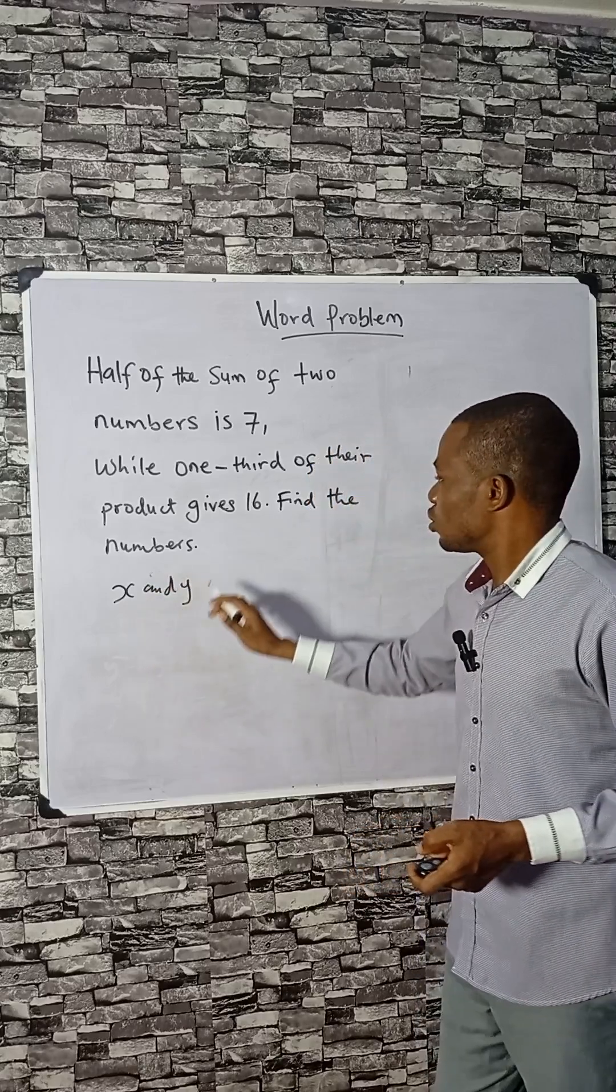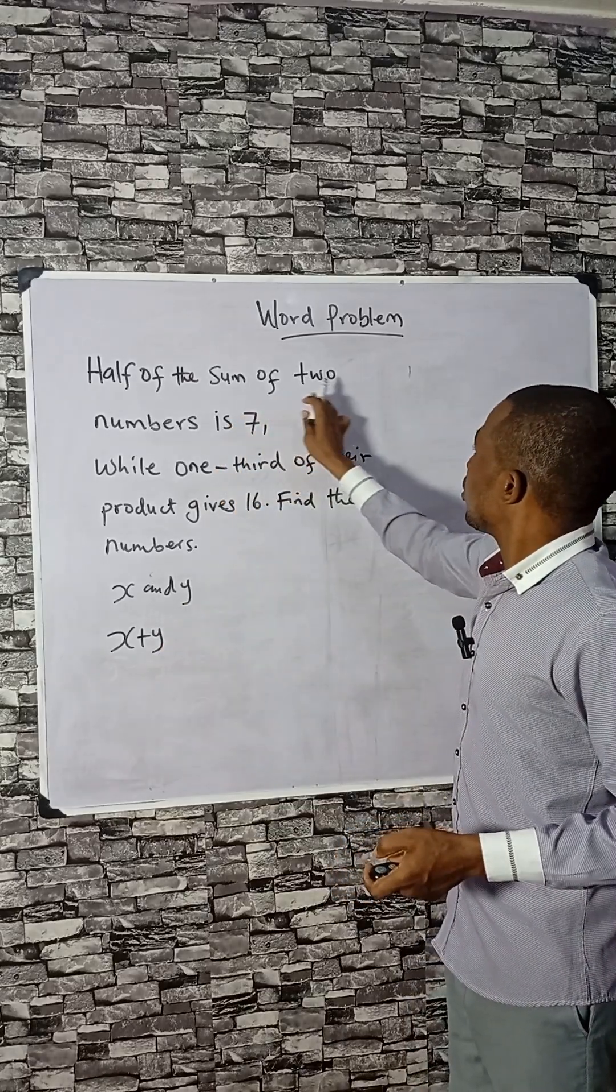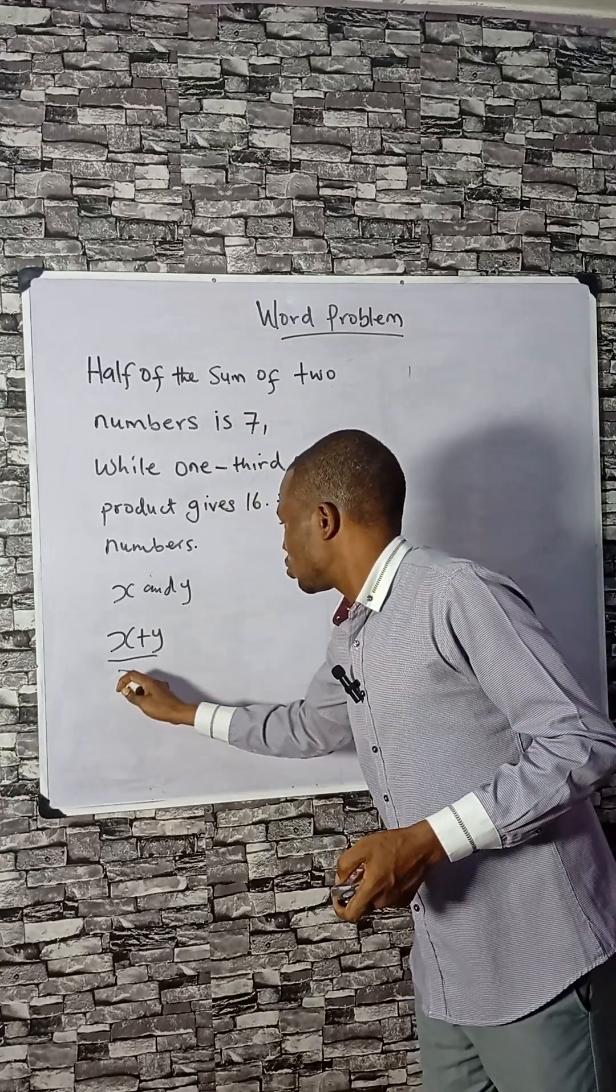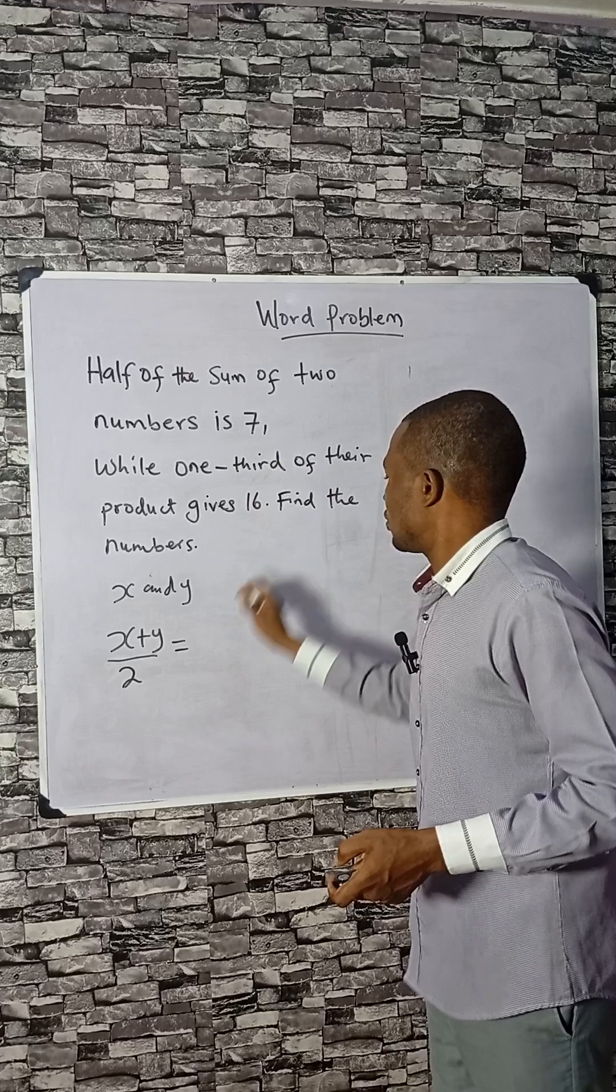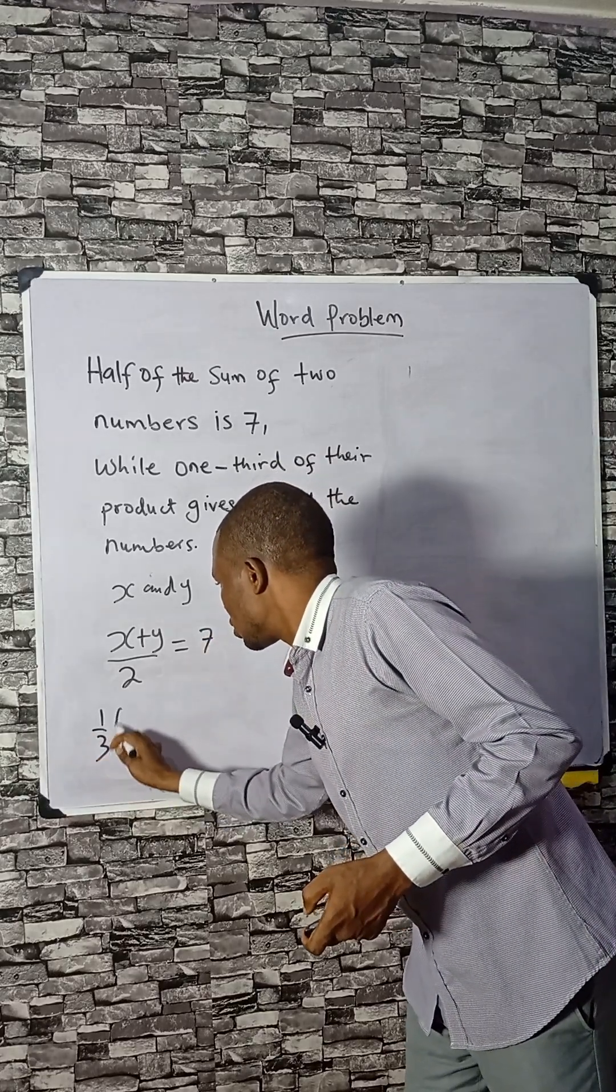That means if you add x and y, the sum of the two numbers divided by 2 will give you 7. That is the first explanation. The second one said that one third of the product will give us 16.